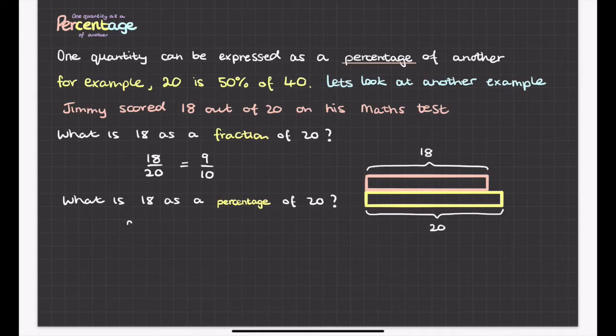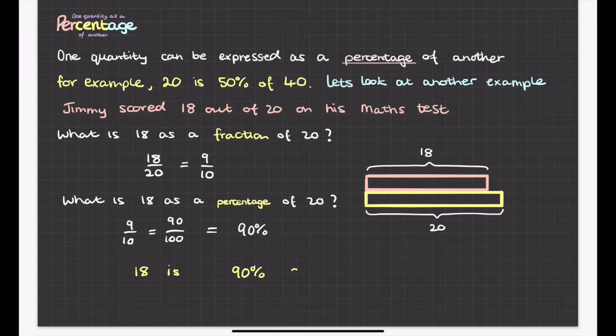And I can change this 9 tenths into a percentage. Percentage means out of 100, so let's try and change this so it's out of 100. I can multiply top and bottom by 10, and that gives me 90%. So 18 is 90% of 20.